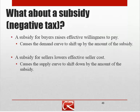When we think about how the subsidy is going to affect the demand and supply curves, a subsidy for buyers raises people's effective willingness to pay because they know the government is going to reward them for the activity. So the demand curve is going to shift up by the amount of the subsidy. If we have a subsidy for sellers, the government is offsetting some of the seller's costs, and so the supply curve is going to shift down by the amount of the subsidy.